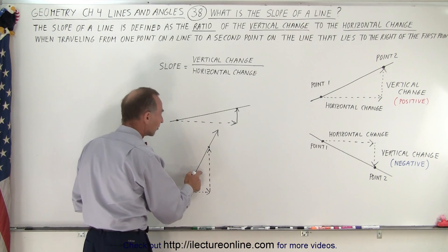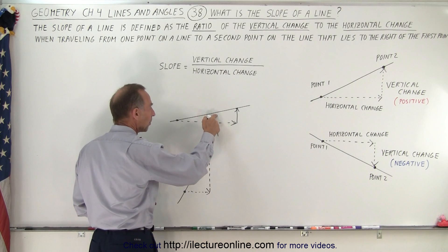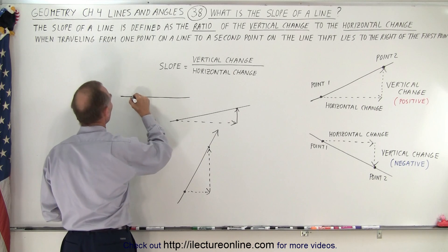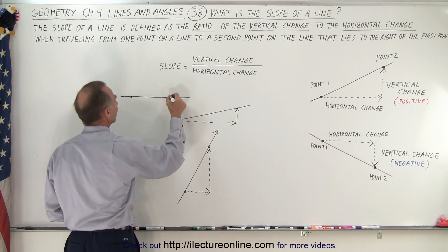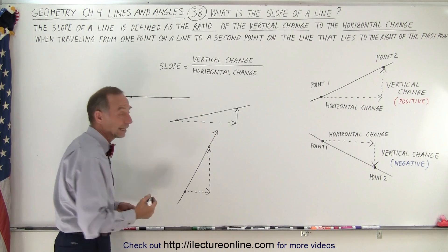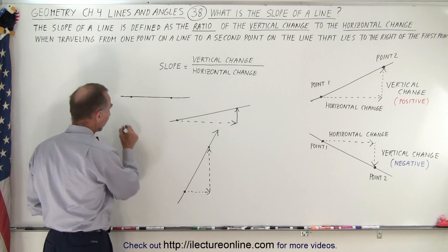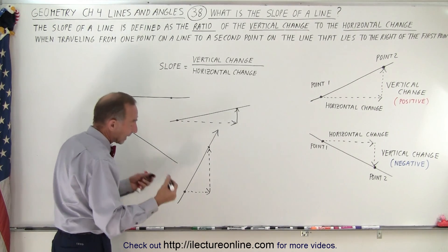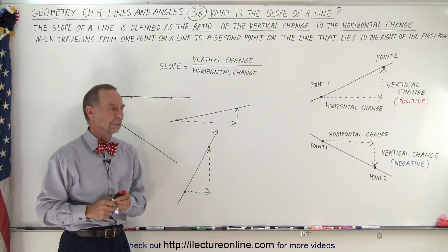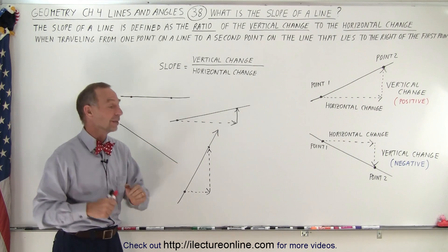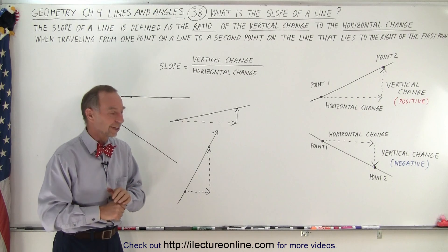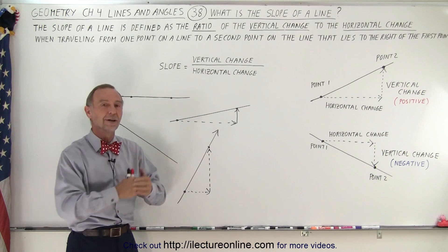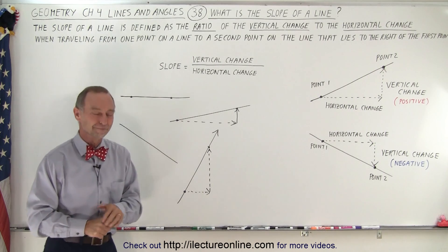So a steep line like this has a large positive slope, while a gently inclined line has a relatively small positive slope. A perfectly horizontal line has zero slope — no change in the vertical direction. And a line sloping downward has what we call a negative slope. That's what we mean by the slope of a line.